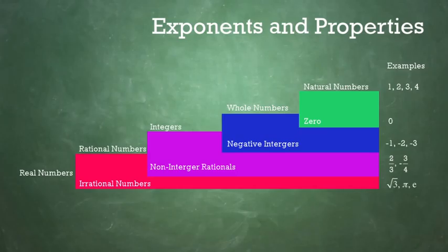As can be seen from the diagram, the real line can be broken up into several parts. Starting on the left and proceeding to the right, we find that the set of all real numbers can be subdivided into rational numbers and irrational numbers.